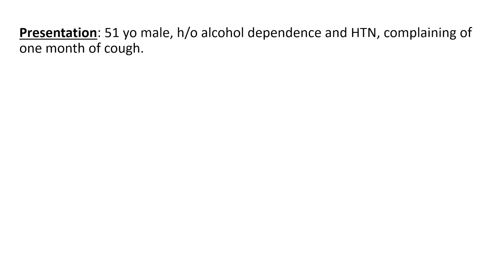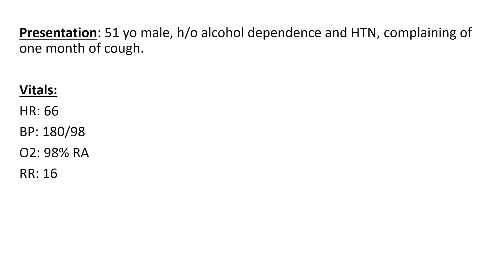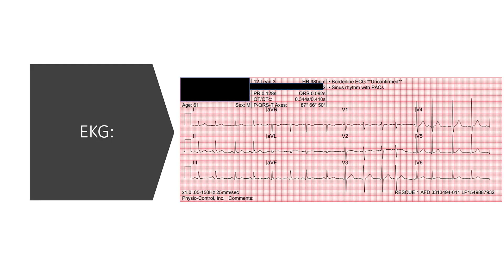He's got a history of alcohol dependence and high blood pressure. His vital signs look like this: heart rate of 66, very reassuring. Blood pressure 180 over 98, a little bit high — I wonder if he's been taking his medication. Oxygen saturation looks great within the setting of his cough and his respiratory rate is normal. So this crew goes ahead and gets a 12-lead, which I think is totally appropriate in this instance, and this is what it looks like.